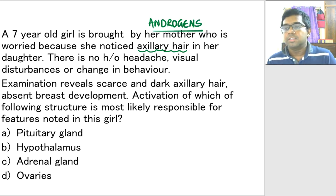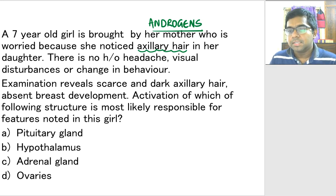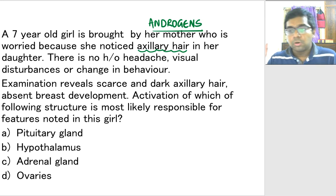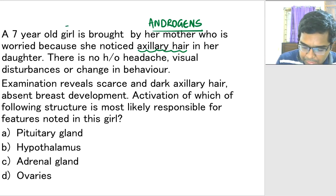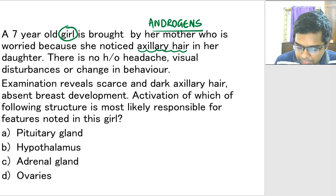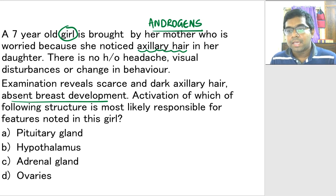The primary source of androgen is going to come from the adrenal gland. The adrenal gland is under stimulation of the central nervous system — the first signal from the hypothalamus, followed by the pituitary, and then to the adrenal gland. Activation of any of these structures — namely hypothalamus, pituitary gland, or adrenal gland — could have resulted in the production of androgen in this girl, resulting in the development of axillary hair.